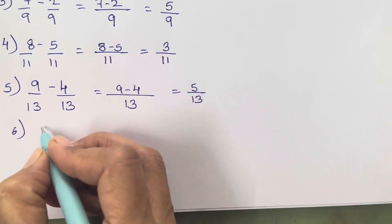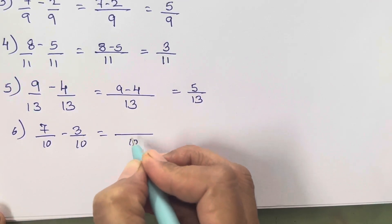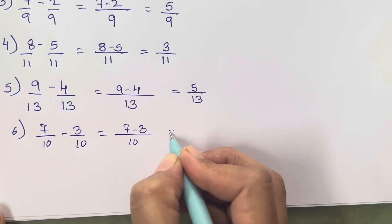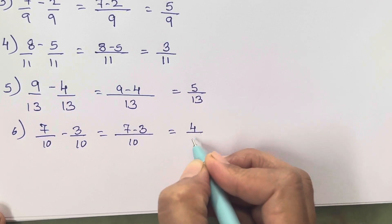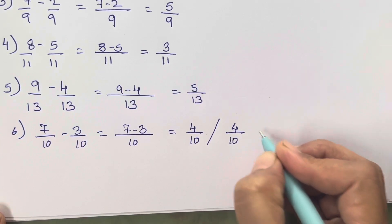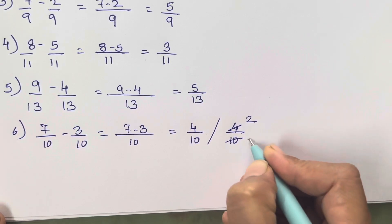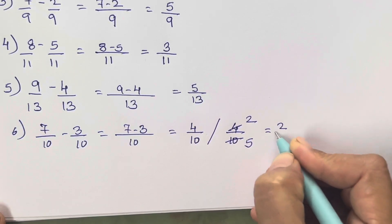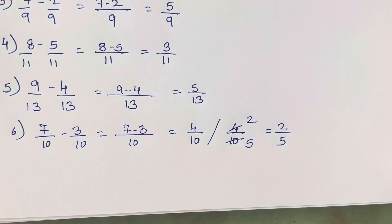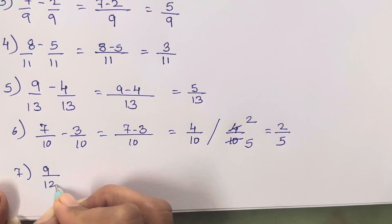Number 6 is 7 upon 10 minus 3 upon 10, so 10, 7 minus 3 is going to be 4 upon 10. Now this answer is also correct, and if you all are going to reduce it or divide it further, so 2 twos are 4, 2 fives are 10. Both the numbers should be divisible by the same number, that is 2, then you will be getting the answer as 2 upon 5.